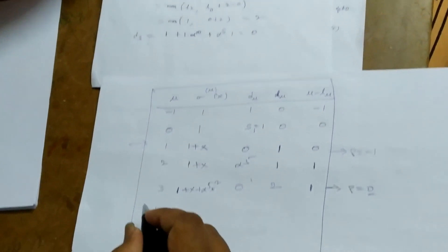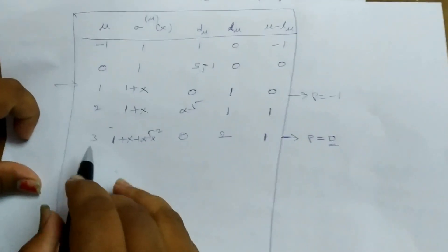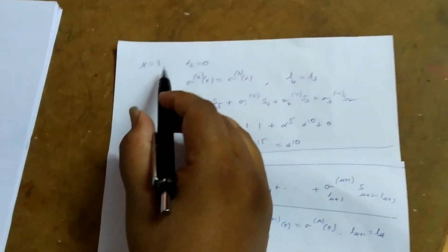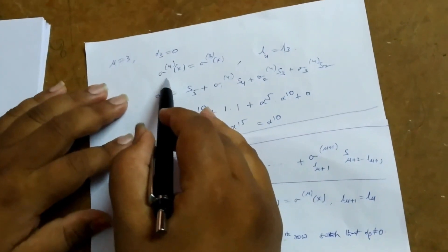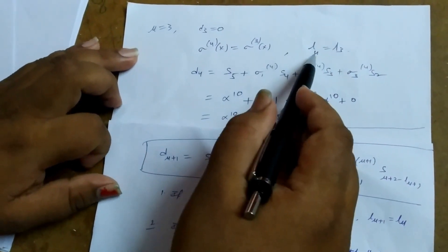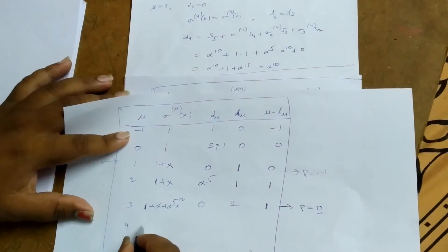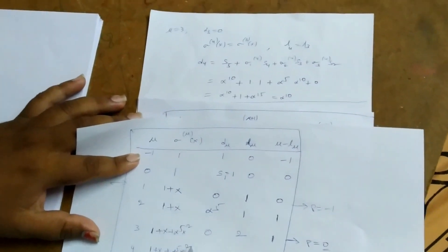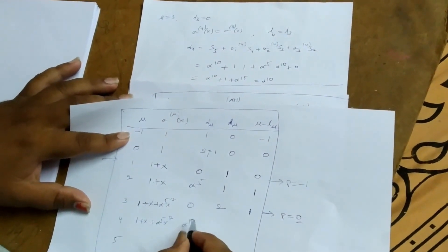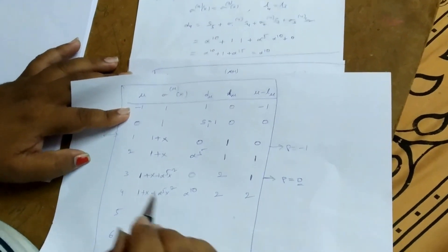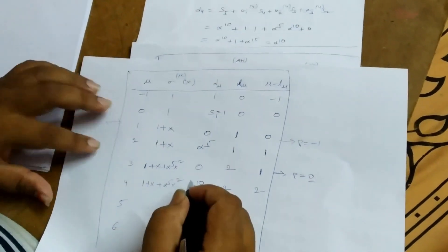For the fourth row we assume μ=3. Since d3=0, it is a simple step: σ_4(x) = σ_3(x) = 1 + x + α^5·x², L4 = L3 = 2. Then d4 is calculated from the formula using syndrome values, giving d4 = α^10, and L4=2, so μ - L_μ = 4-2 = 2.